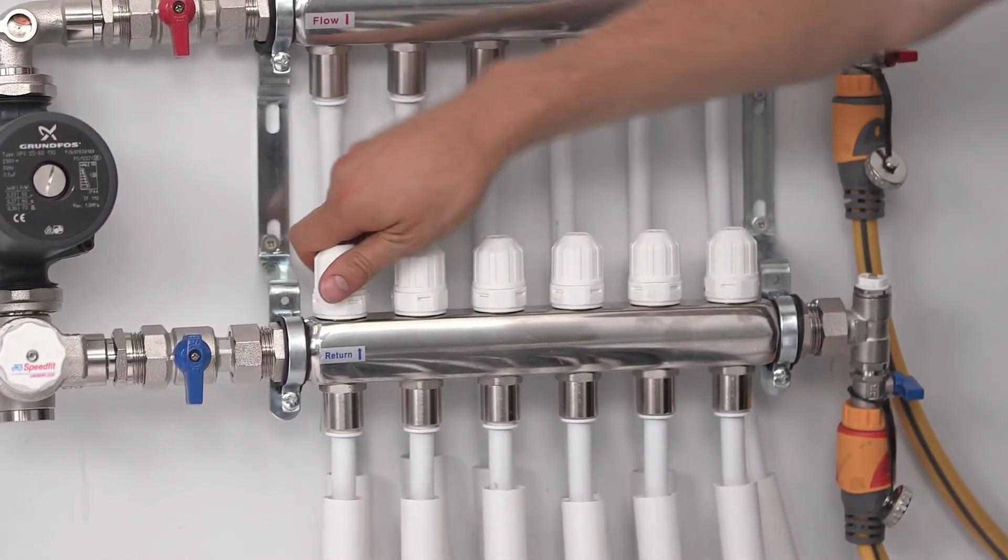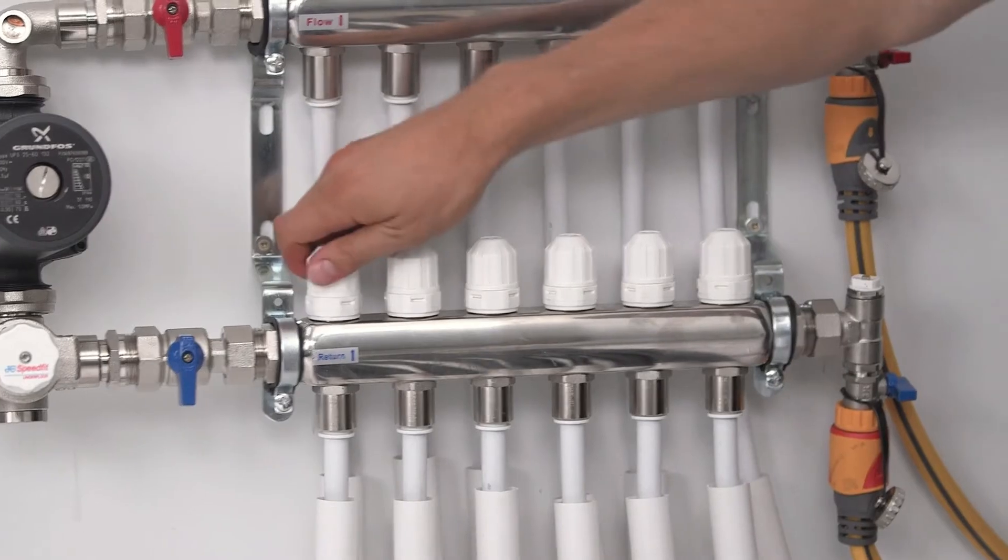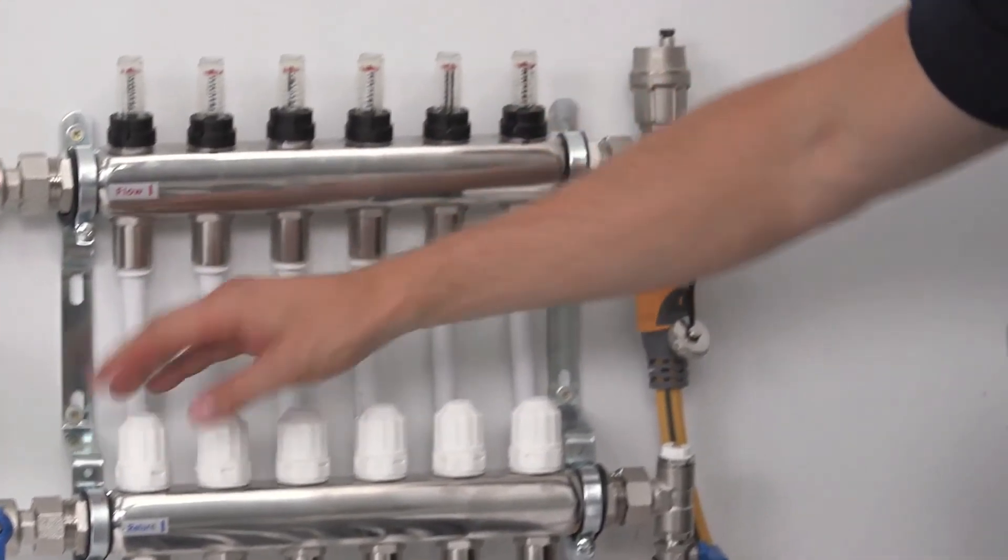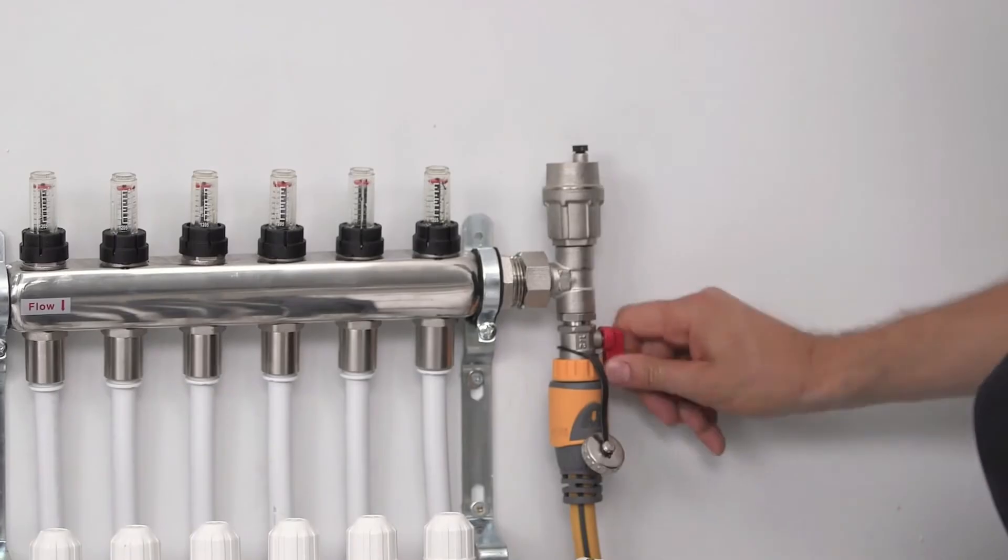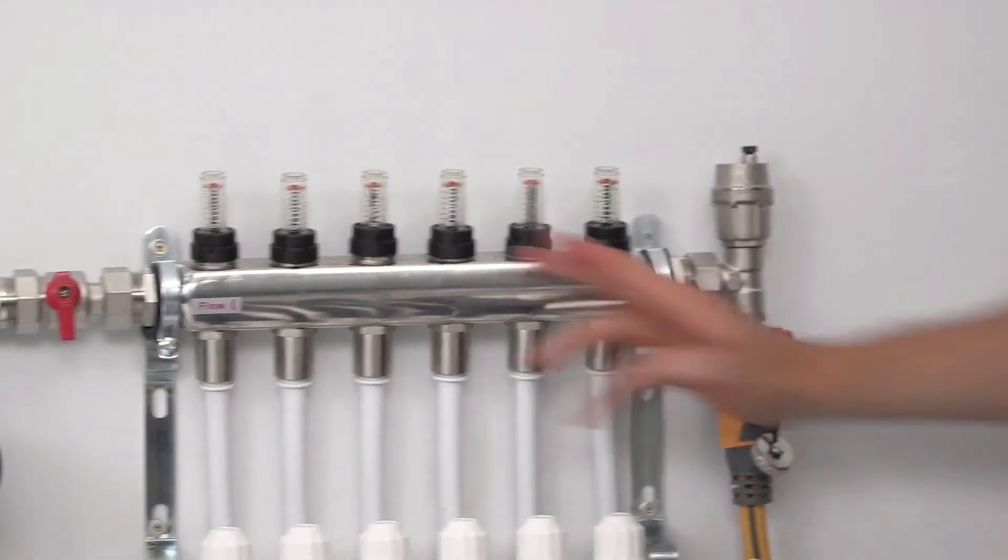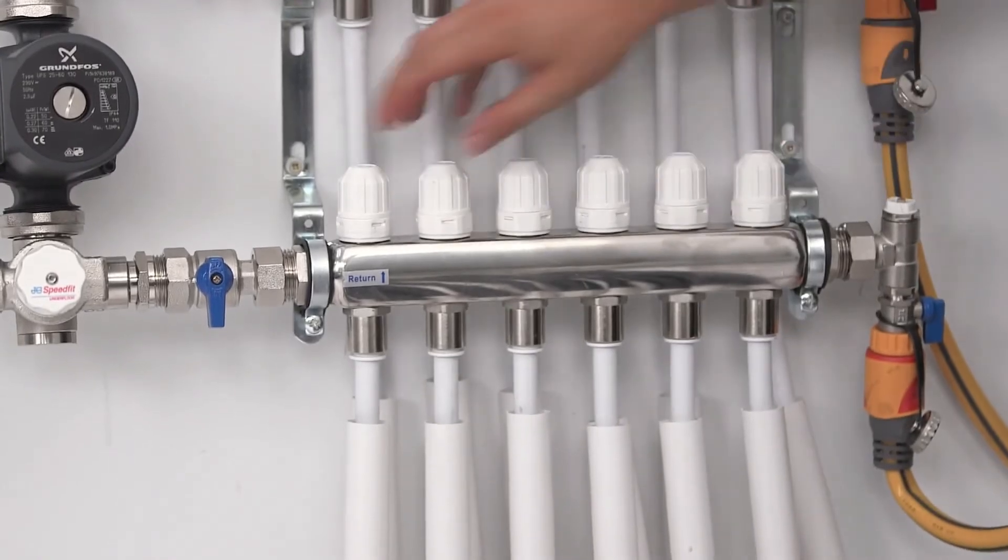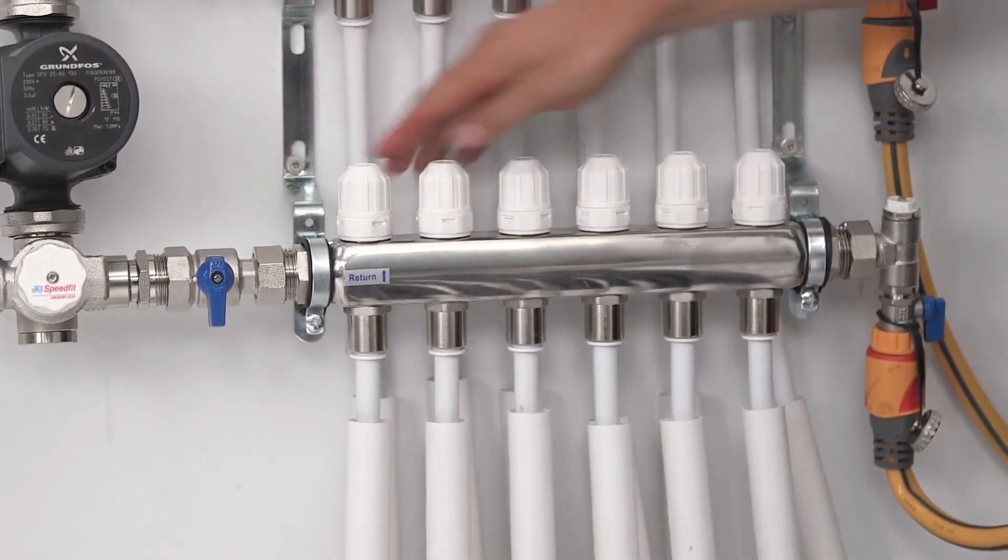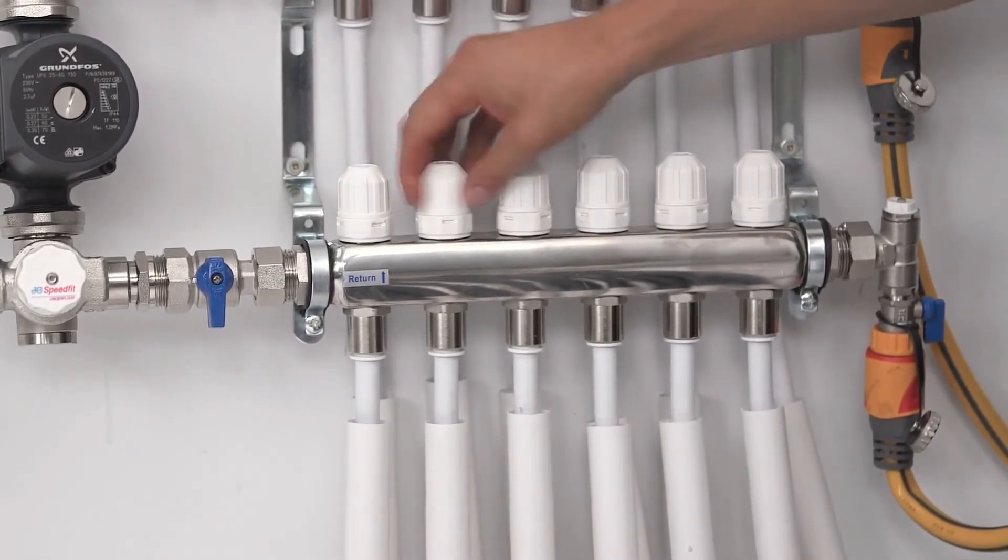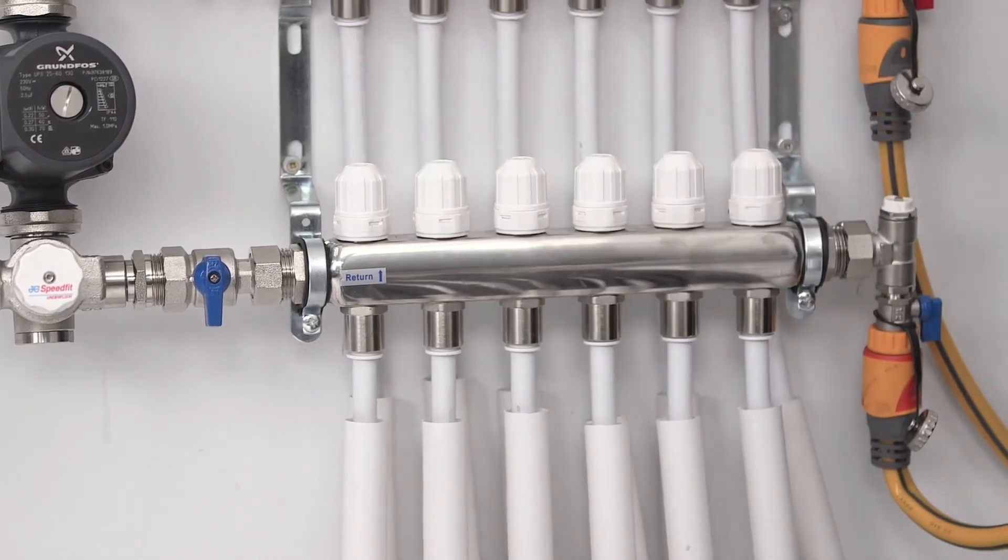Then, starting at the furthest end of the manifold, open only one of the decorators caps. Flush the water around the loop until all the air is purged. Close the cap and open the next circuit. Repeat the process until every circuit is purged.